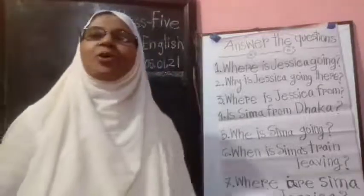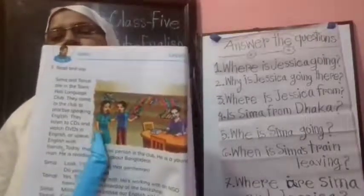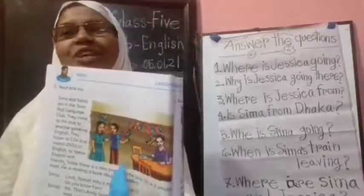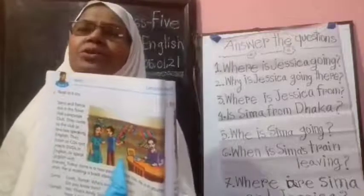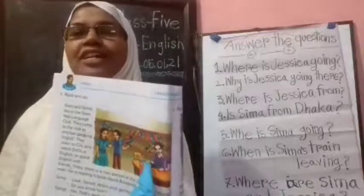Students, now open your book at page 4. Who are there in the picture? Shima, Tamal, and Andy Smith. Andy Smith is a foreigner Englishman. Students, where are they? They are in the town hall language club. So how can Andy Smith help them? As an Englishman, he can help them to practice speaking English. Okay, thank you students.